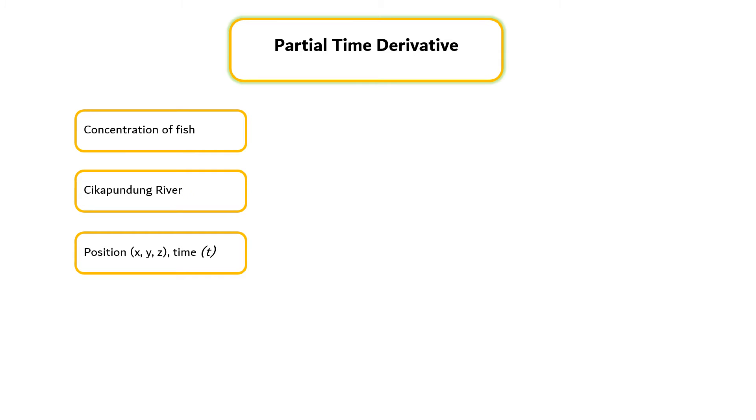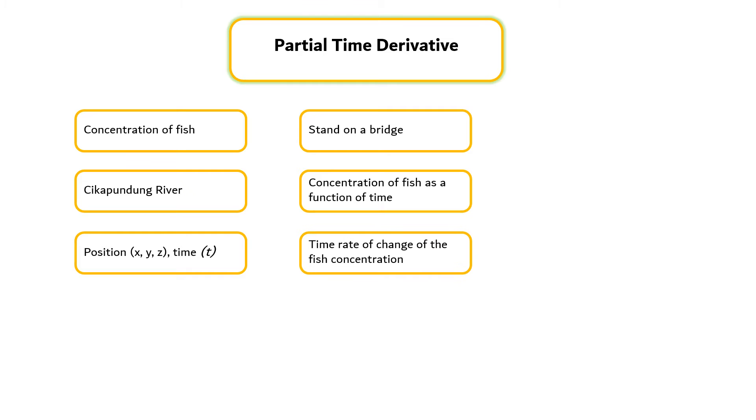The partial time derivative: Suppose an observer stands on a bridge and observes the concentration of fish just below the bridge as a function of time. We can then record the time rate of change of the fish concentration at a fixed location. The result is partial derivative of c with respect to t at constant x, y, and z.